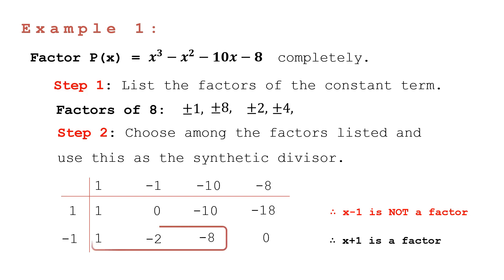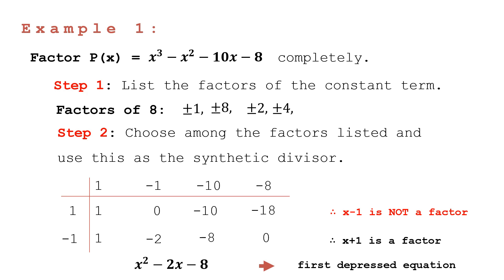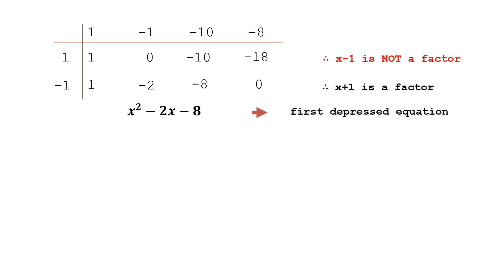Now that we have one factor, we write the remaining coefficients as the first depressed equation. The advantage of the depressed equation is that we have a greater chance of finding all factors. Together with variables, the first depressed equation has an exponent one less than the original. We get x² minus 2x minus 8 as our first depressed equation.